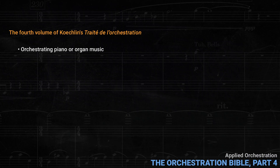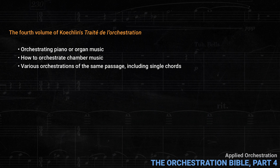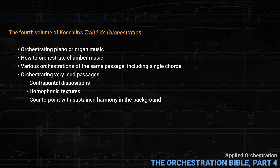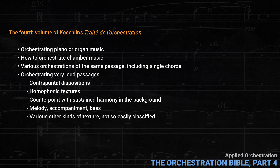The next section of this chapter is about orchestrating piano or organ music, as well as how to orchestrate chamber music. Each of these situations poses specific challenges. It's important not to transcribe the original music note for note — you need to rethink it in orchestral terms. Then there are examples of various orchestrations of the same passage, including single chords. There's an interesting section about orchestrating very loud passages, since certain issues of orchestral balance come more to the fore when the musicians are playing loud. The textures discussed include contrapuntal dispositions, homophonic textures, counterpoint with sustained harmony in the background, melody, accompaniment and bass, and various other kinds of texture that aren't so easily classified.